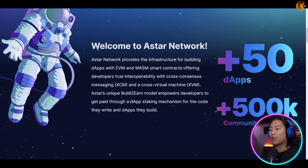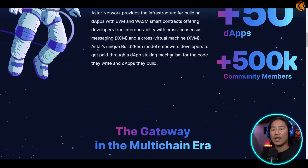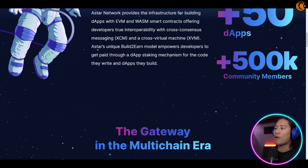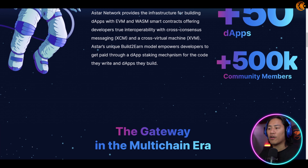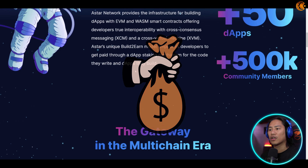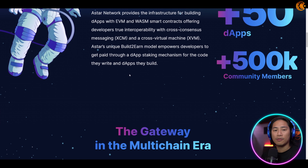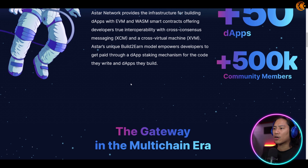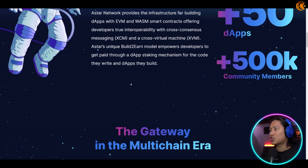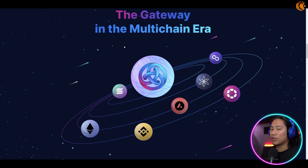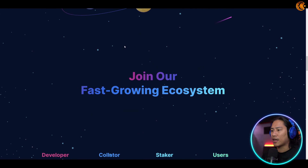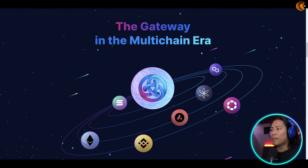Welcome to the Astar Network. It provides the infrastructure for building dApps with EVM and WASM smart contracts, offering developers true interoperability with cross-consensus messaging, or XCM, and a cross virtual machine, which is the XVM. Astar's unique build-to-earn model empowers developers to get paid through dApps staking mechanisms for the code you write and the dApps that you build.